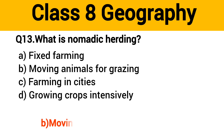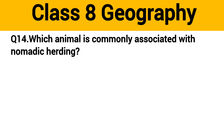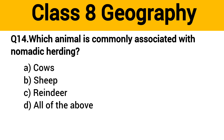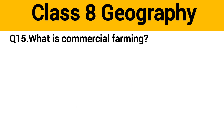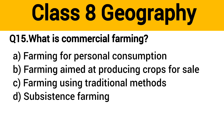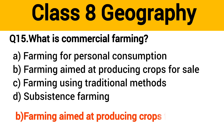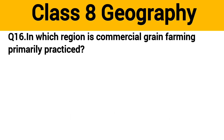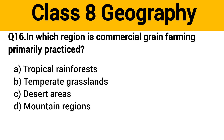Question number 12: What is one potential disadvantage of shifting cultivation? The right answer is option C: deforestation. Question number 13: What is nomadic herding? The right answer is option B: moving animals for grazing. Question number 14: Which animal is commonly associated with nomadic herding? The right answer is option B: sheep.